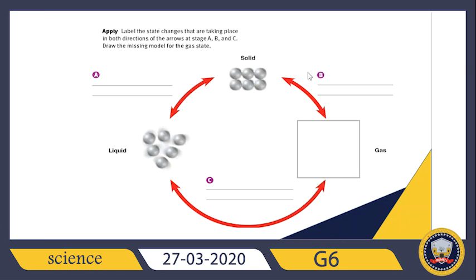Let us summarize all the processes we have learned in this lesson. We have evaporation and condensation, melting and freezing, and also sublimation and deposition. Now, label the state changes taking place in both directions on the arrows at stages A, B, and C, and draw the particle model for the gas state.